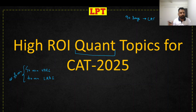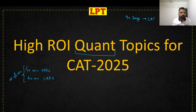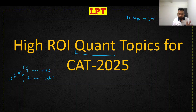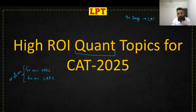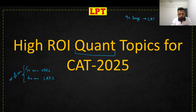So you need a strategy for quant. We will understand which topics in quantitative aptitude you should target in these last 90 days, what their weightage has been, and I'll show you the breakup of the last 2 to 3 years. At the end, I'll show you scorecards from 2024 — how many questions at what score gave you what percentile in the quant section.